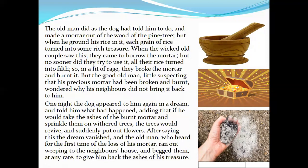The good old man was a little suspicious and thought something might have happened to the mortar. He came to the neighbor and asked for it back. The old man had done as the dog told him — cut the pine tree and made a mortar. When he ground rice in it each grain turned into rich treasure, but when the wicked couple tried it, all their rice turned into filth. In a fit of rage they broke the mortar and burned it.